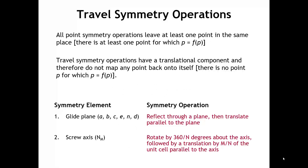If you think about the point symmetry operations, part of the definition of all of those operations is that there's always at least one point that doesn't move or is not changed by the symmetry operation. For example, if you have a mirror plane, any point that is on the mirror plane is unchanged. If you have an inversion center, the point that is on the inversion center is not changed by the symmetry operation.